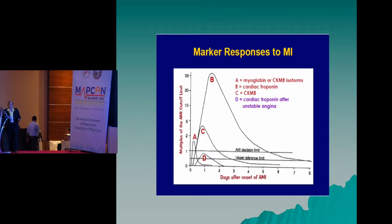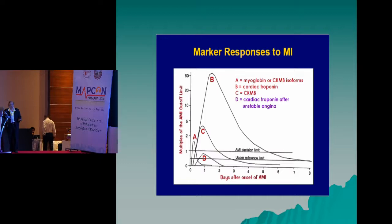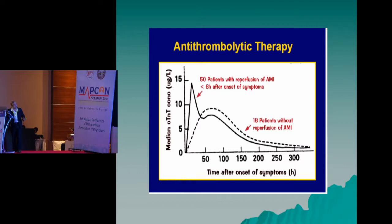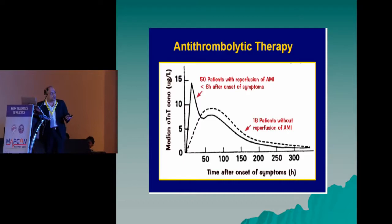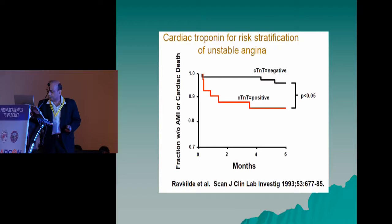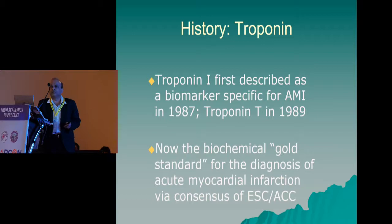The temporal release profile shows that troponins are released around four to six hours after the event, peak around 24 to 36 hours, and remain in blood for one to two weeks. The temporal profile also tells us whether there is successful reperfusion — with successful reperfusion, there is a sharp early peak that comes down compared to non-reperfused patients. Troponin values at admission predict mortality at 30 days, making troponins the near-ideal biomarkers.